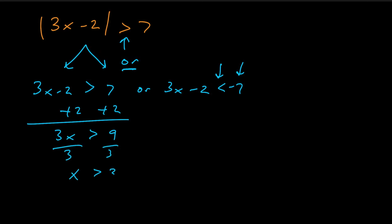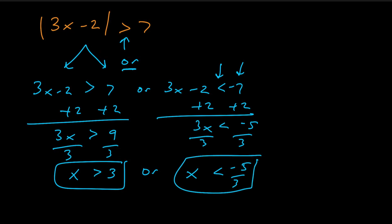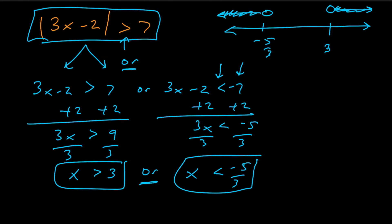Solving each individually: x is greater than 3, or x is less than negative five-thirds. Since it's an 'or' type, we list them separately with the word 'or' in between. On the number line: negative five-thirds on the left, 3 on the right, with open circles since it's strictly greater than or less than — not equal to. It includes all points on the outer regions, but a value like zero in between would not satisfy the inequality.